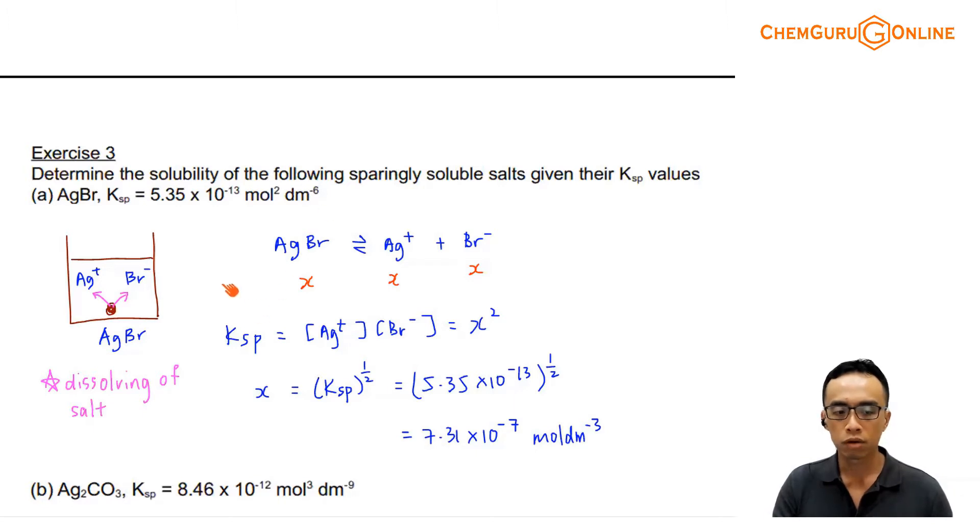The scenario is exactly the same. You have the dissolving of your salt, AgBr, and it splits into solution to give me Ag+ and Br-. Eventually the solution will be saturated, and therefore we can talk about solubility, we can talk about X.